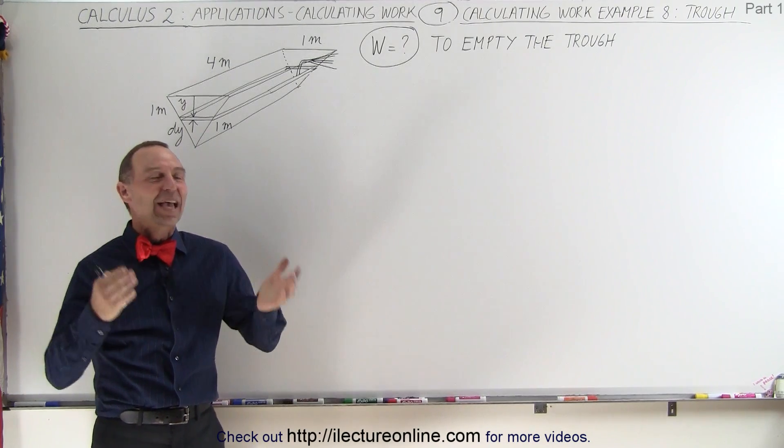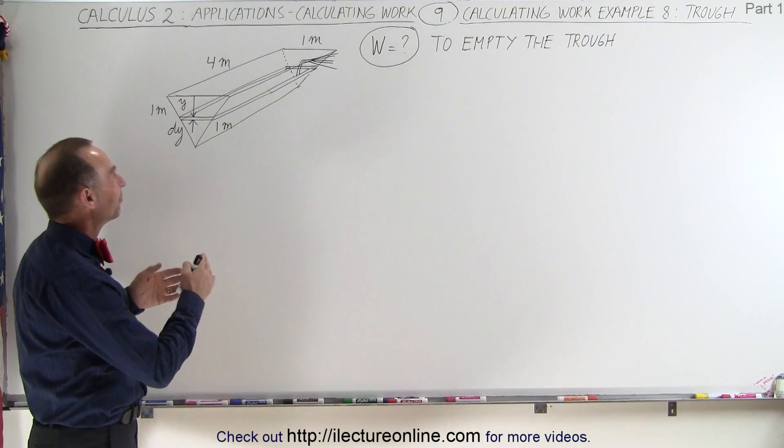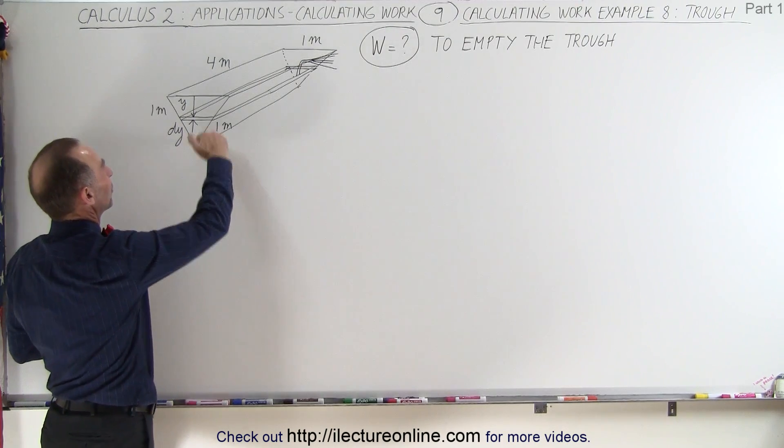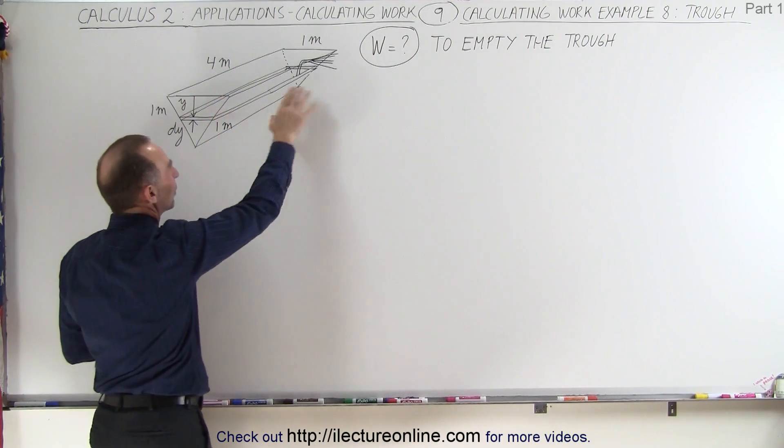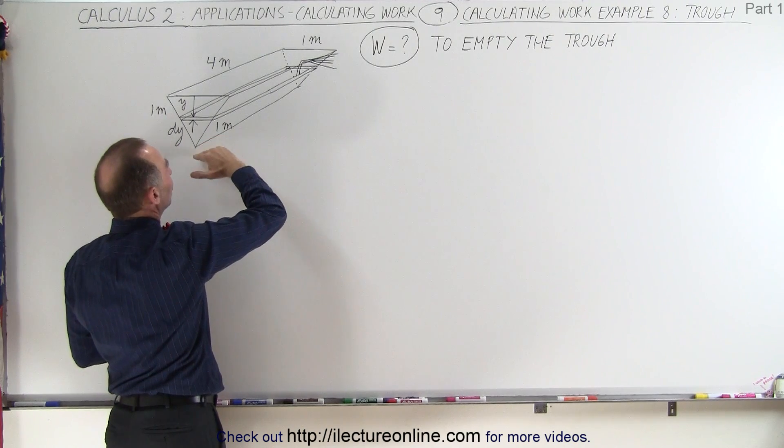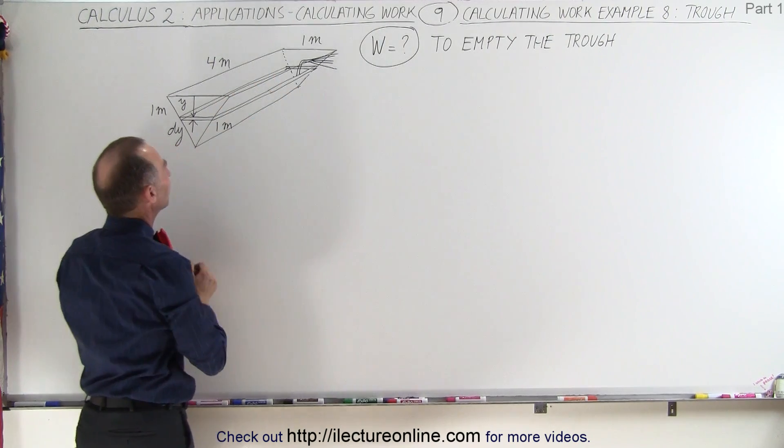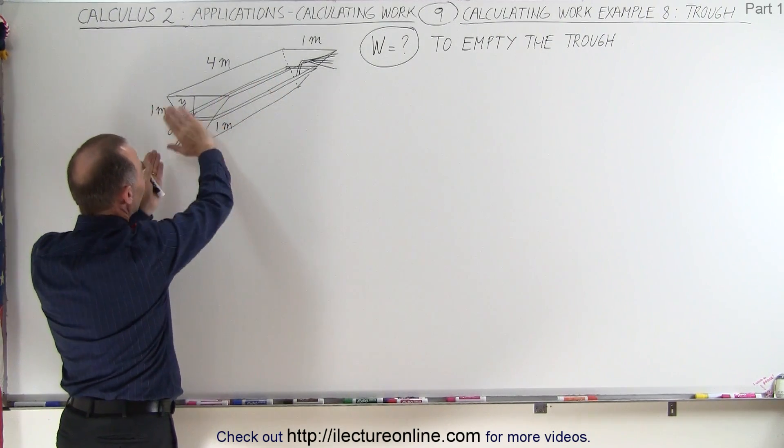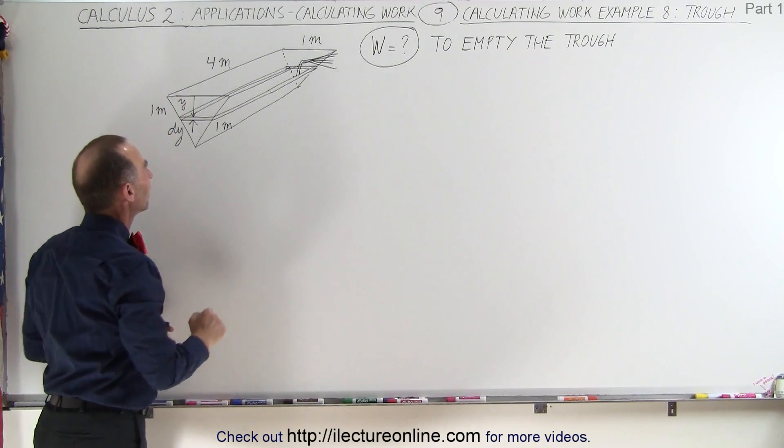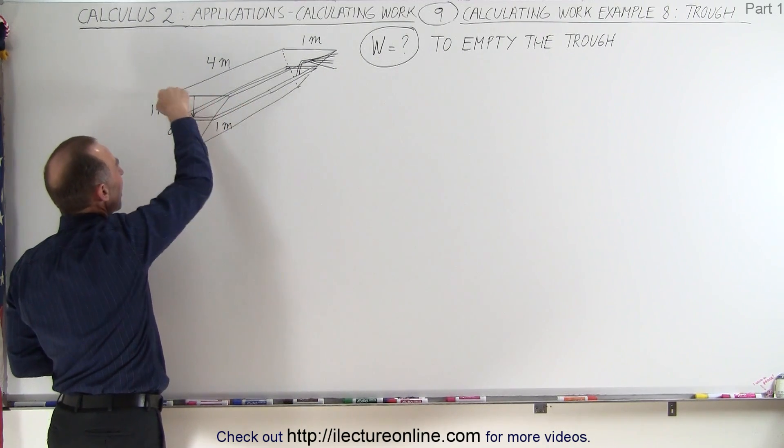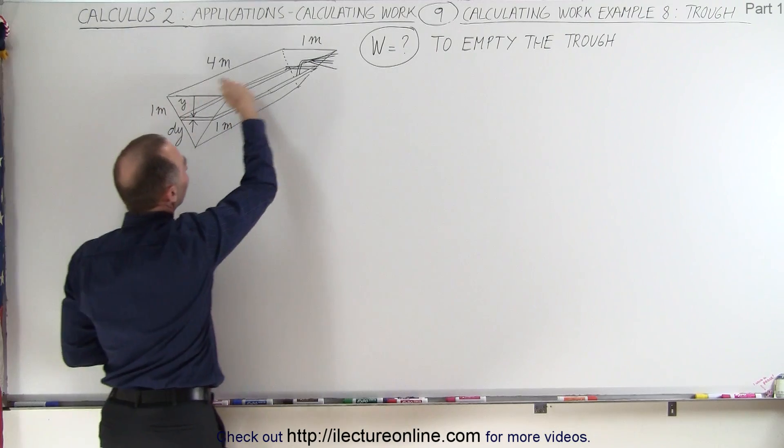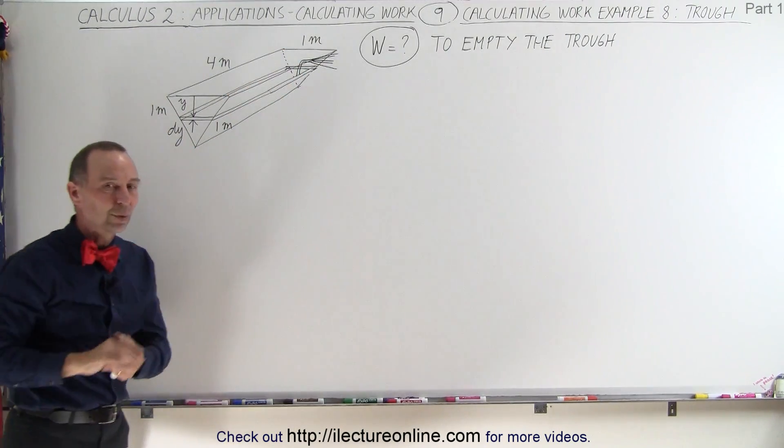A very typical problem in this category is emptying a trough. Assuming that the trough is filled with water, we're going to figure out how much work it takes to remove all the water from the trough. Notice that the cross-sectional area is triangular in shape. The sides are one meter at the top, one meter at the sides, and the length is four meters and it's filled with water.